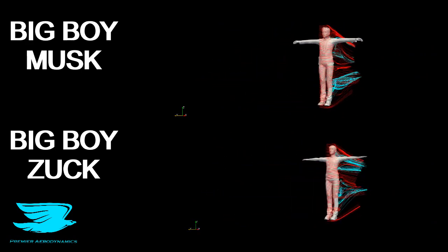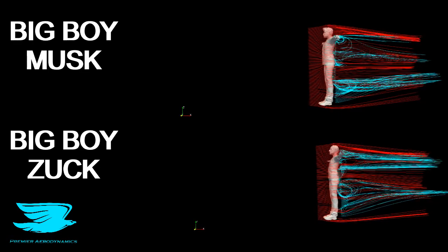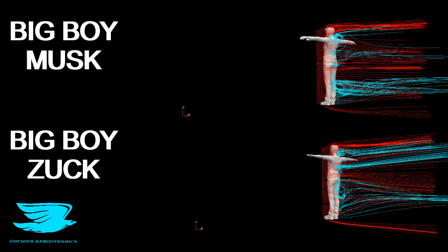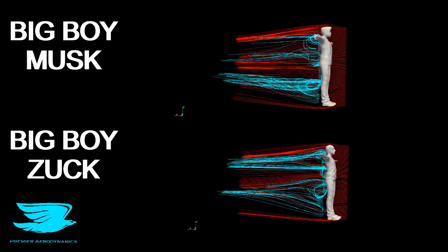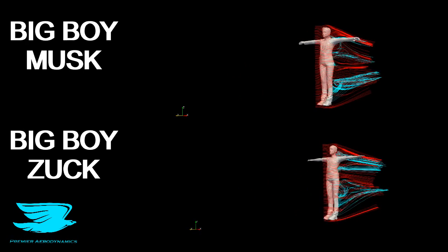So that is quite a big difference in the flow physics we're seeing here. As I mentioned, Zuck is better in terms of his drag coefficient, whereas Musk is better in terms of his efficiency.